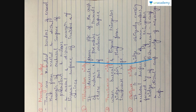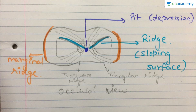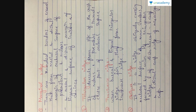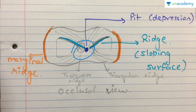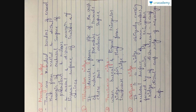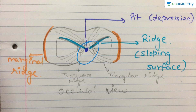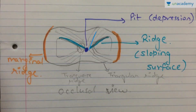The triangular ridge descends from the tips of the cusps of molars and premolars to the center point. You can see the ridges are sloping down from the cusp to the center point. The transverse ridge is the point where two triangular ridges meet. The triangular ridge descends from the tip of the cusp towards the center occlusal point.